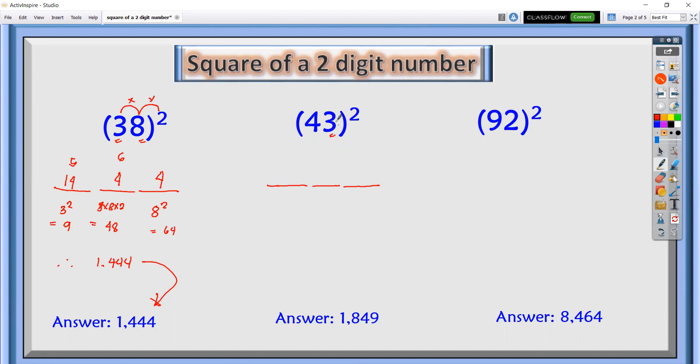Square the last number, 3 squared is 9. For the middle number, we will multiply 4 times 3 is 12 times 2 is 24, carry 2.